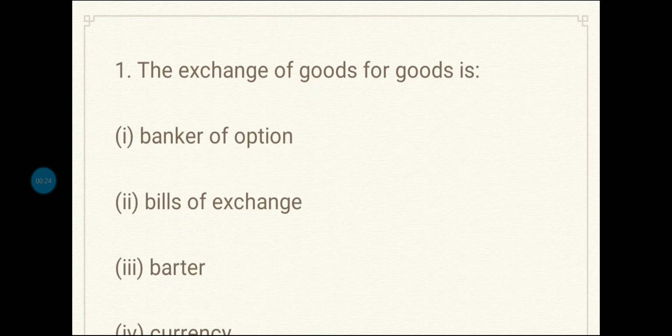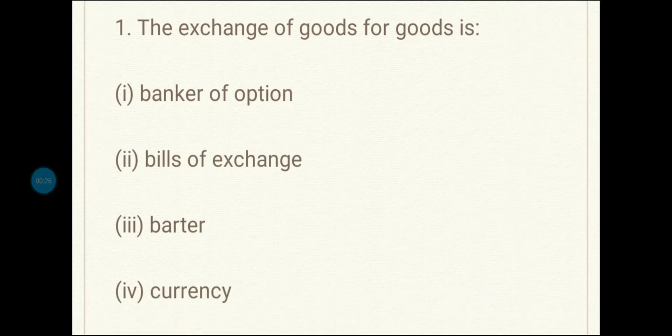First question: the exchange of goods for goods is — the correct answer is option number 3, that is, barter. When goods were exchanged with goods in the early times, it was called the barter system.